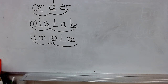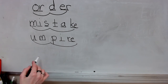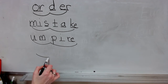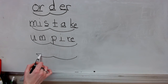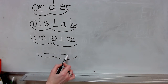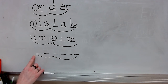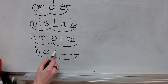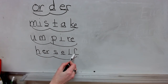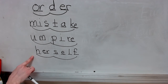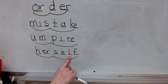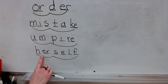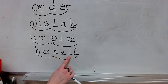The next word is herself. What word? Syllables: her-self. Stretch: h-er-self. Write the spelling for herself. Check it and correct it. What word? Spell herself. Yes — herself.